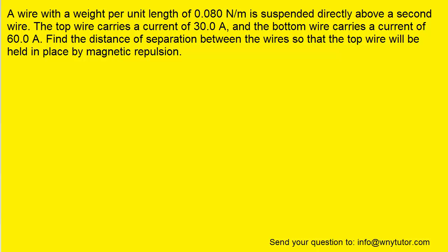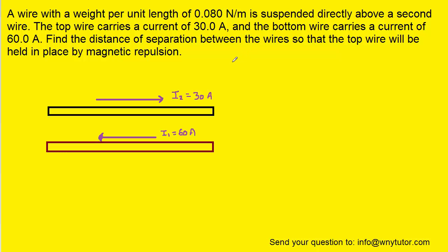Our first step in solving the question will be to draw a picture. In this case, the picture is relatively basic. We have one wire hovering above another, and the top wire carries a current of 30 amps and the bottom wire carries a current of 60 amps. We've labeled those currents I2 and I1, respectively.